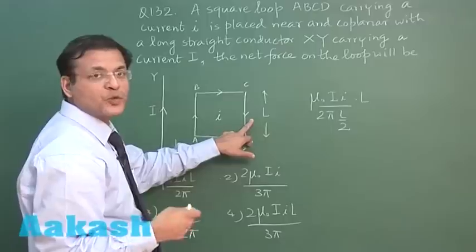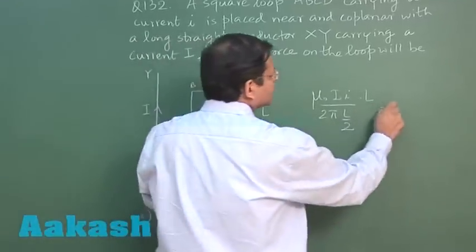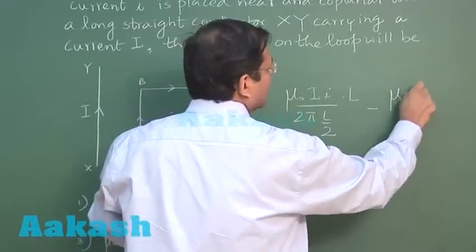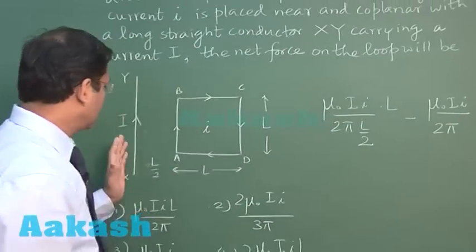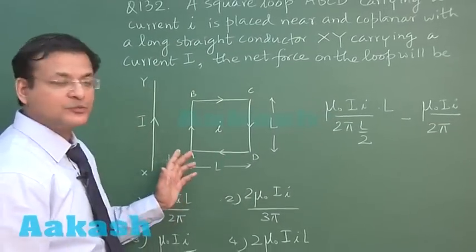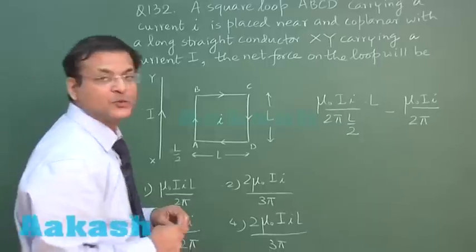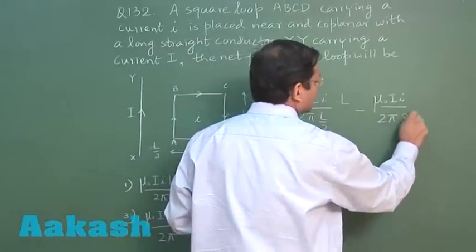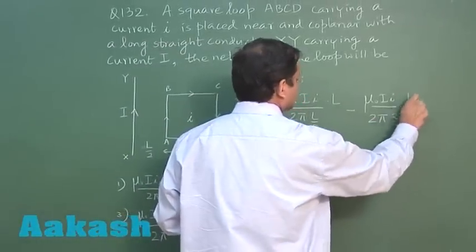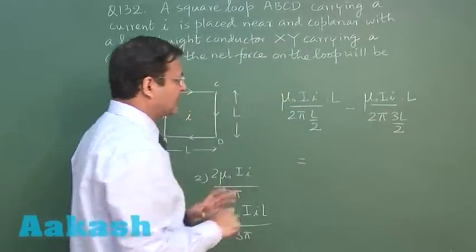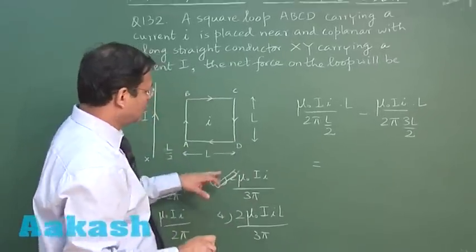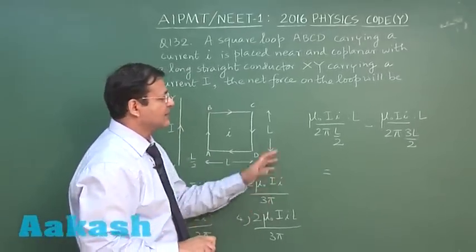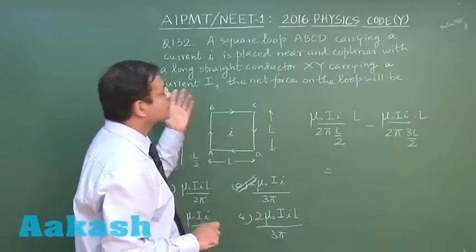Force on this wire will be opposite to that, so I am using minus sign. Once again mu naught i1 i2 upon 2 pi d. This time d is total 3L by 2, and length of the wire. If you calculate this thing, you will be getting the answer 2 mu naught iI upon 3 pi. This is the answer to question 132.